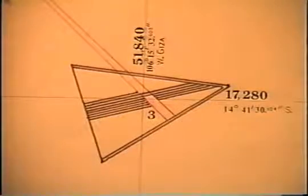Multiply its grid latitude of 17,280 by 3, and voila, 51,840. Which encodes 106 degrees, 15 minutes, 32.6 seconds, right through the center of the triangle.